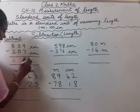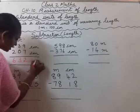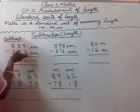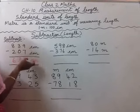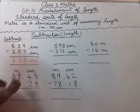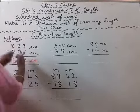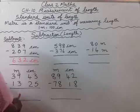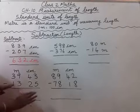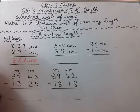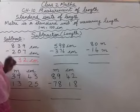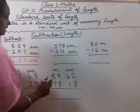So 632 centimeter is the answer. You need to write centimeter below. If meter and centimeter are written separately, you must write both units. If they are on the same line together, there is no need to write it separately.